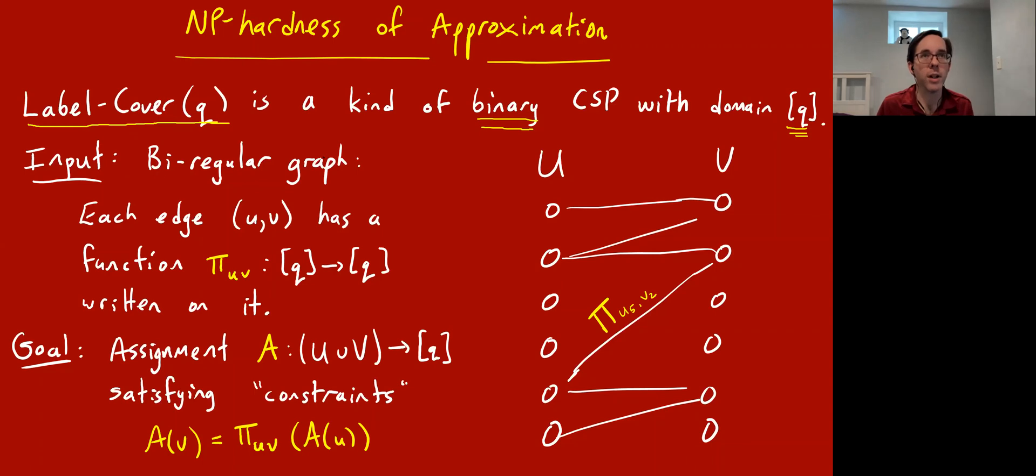In the label cover problem, you're given a bipartite graph, and in fact, you can even assume it's regular on both sides. Each edge represents a constraint, and it has pretty liberal kinds of constraints. Every edge has a constraint written on it, and it's just given by like a truth table. It's given by a function π_uv. You have one of these π's for every edge, and the π is just a function from 1 through q to 1 through q. It's given as a table, I think of q as a constant, I don't know, 10 or something.